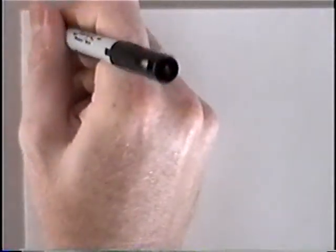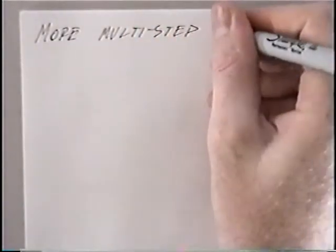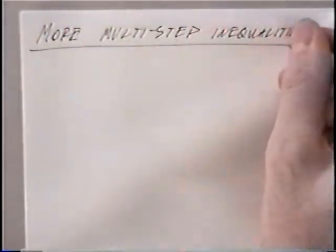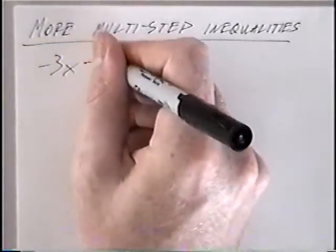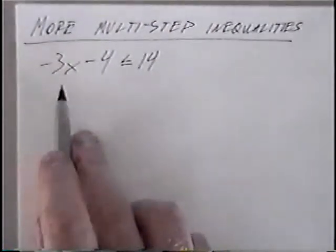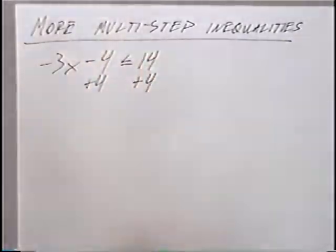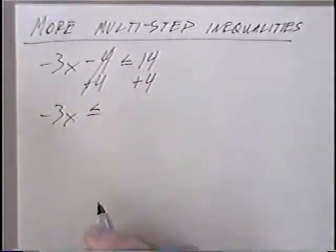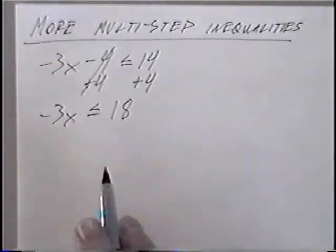The next section of notes is titled More Multi-Step Inequalities. The first problem is negative 3x minus 4 less than or equal to 14. We want to get x by itself. The first step would be to get rid of the minus 4, which we can do by adding 4 on both sides. Negative 3x would come down, the 4s would cancel. Less than or equal to 14 plus 4 would be 18. The inequality again does not switch if you add or subtract a number.